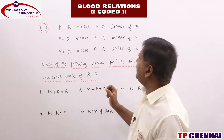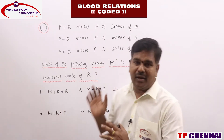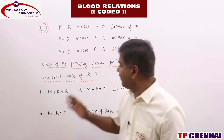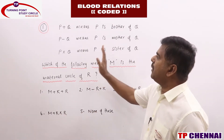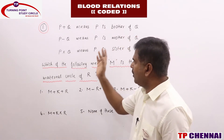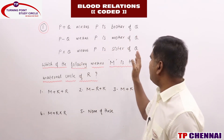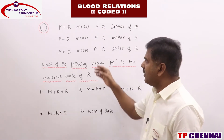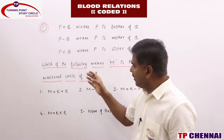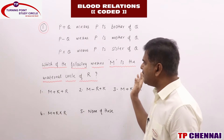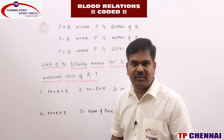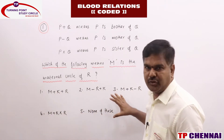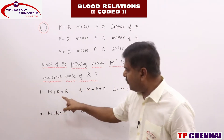We are going ahead with blood relation part 3. In this part, if you see the question itself: P plus Q means P is brother of Q, P minus Q means P is mother of Q, P into Q means P is sister of Q. Three codings are given. We need to find out which of the following means M is the maternal uncle of R — maternal means mother's side.